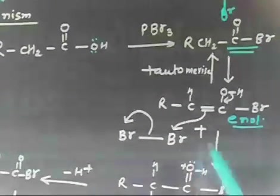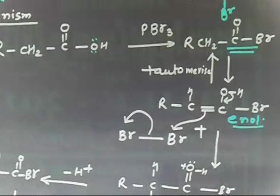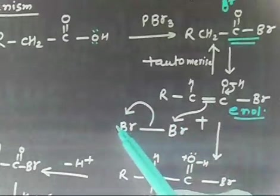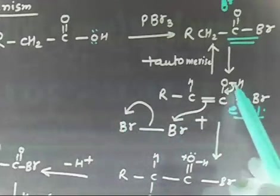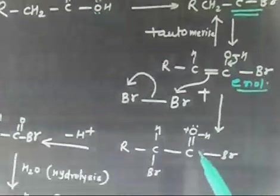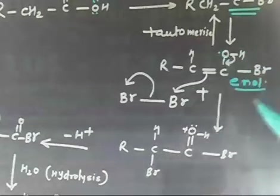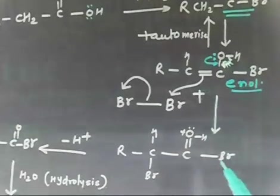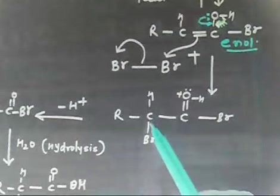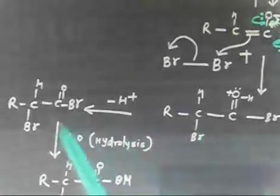This enol form can further react with bromine. Recall that for an alkene reacting with Br₂, the alkene nucleophile attacks Br₂ — one bromine leaves as Br⁻ and attacks further. So this carbon gets a positive charge. The lone pair goes here, bromine is added, giving a positive charge; in the next step you lose H⁺.